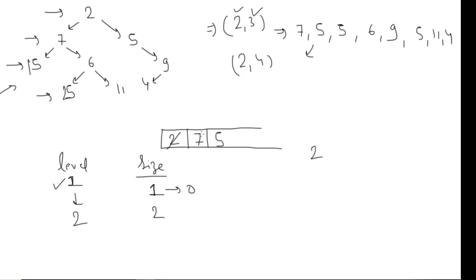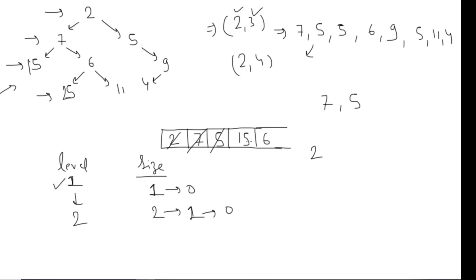I'll process elements one by one. First I remove seven, check whether it's at a permissible level — yes — so I print seven. I reduce size from two to one, and check if seven has any left or right children: yes, it has fifteen and six. Then I remove five, check permissible level — yes — so I print five too. I reduce size to zero, and since five has a right child nine, I add nine to the queue.